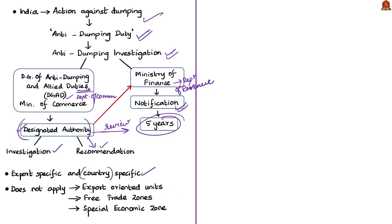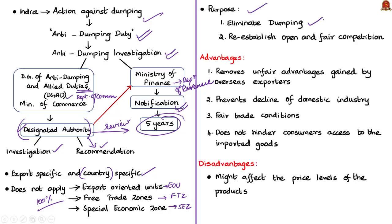Anti-dumping duty would not apply to goods imported from 100% export-oriented units (EOU) and units in free trade zones and special economic zones (SEZs). The purpose of anti-dumping duties is to eliminate dumping that causes injury to domestic industry and to re-establish open and fair competition in the Indian market. The imposition would remove unfair advantages gained by overseas exporters through dumping practices, prevent decline of domestic industry, and create conditions for fair trade. Importantly, it would not restrict imports from the subject country nor hinder consumers' access to imported goods.